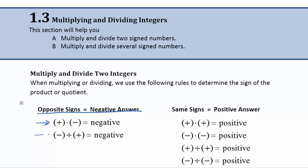And if we reverse that, same thing — negative times positive, I'm going to get a negative answer. The other rule is this: if we have the same signs, we're going to get a positive answer. And this works whether we're multiplying or dividing.